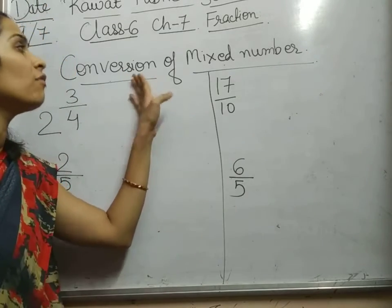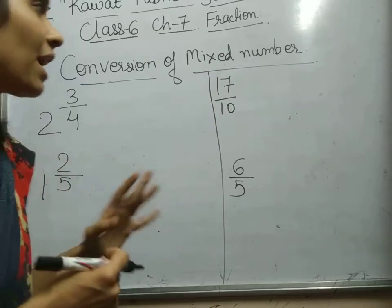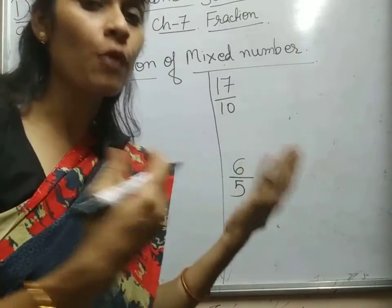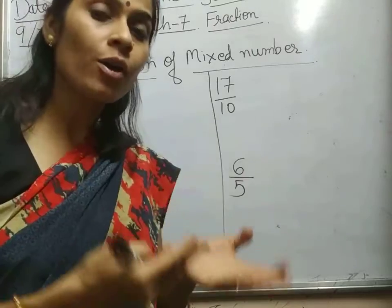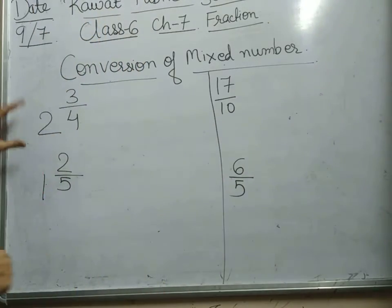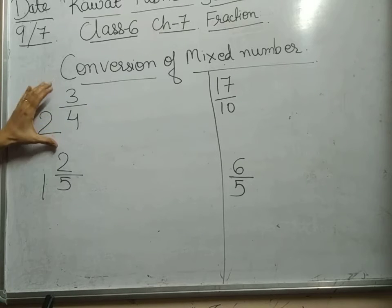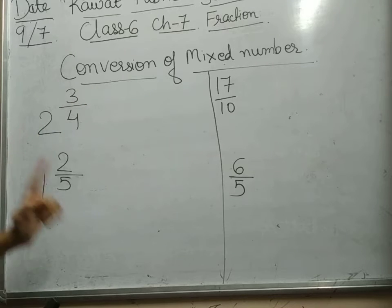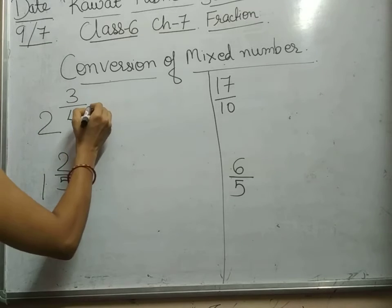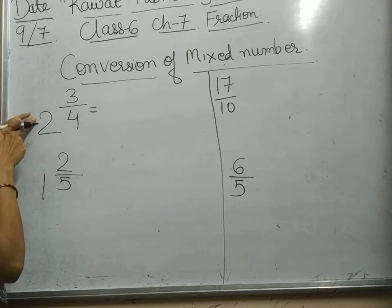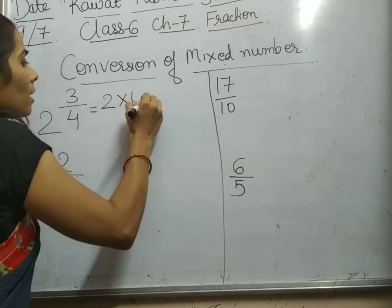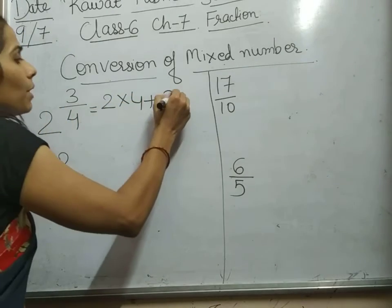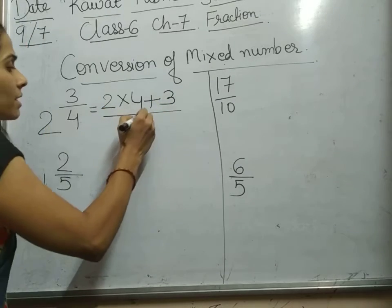The next topic is conversion of mixed number. It is a combination of whole number and proper fraction. Now, if you are asked to convert a mixed number into a proper or improper fraction, how we will do? For example, I have taken two and three by four. Two, three by four is taken as a mixed number and we have to convert it into an improper fraction. For that, we multiply two with the denominator — two into four — and add the numerator plus three, divided by the denominator which remains the same, that is four.